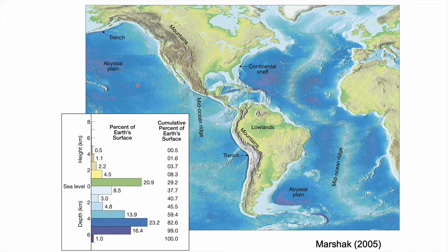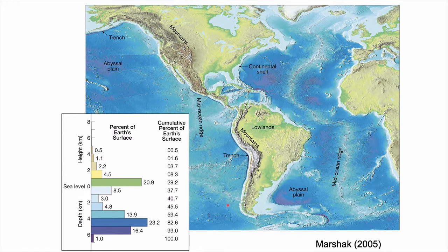Because it's thicker and lighter, when it's floating in the asthenosphere it rides higher, and its average elevation is almost a kilometer above sea level. Ocean crust, on the other hand, is thin — less than 10 kilometers thick — has a higher density with more iron and calcium and less aluminum. It rides lower in the asthenosphere, and its equilibrium point for floating is about minus 3.8 kilometers below sea level. This is what gives us ocean basins and continents.